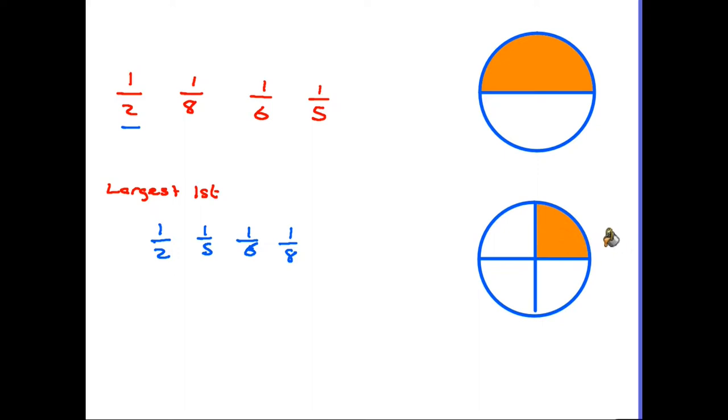So if I shade one of those quarters in we can quite easily see that a quarter, that is one over four, is smaller than a half which is one over two. So the smaller the number on the bottom of the fraction the larger the fraction is, provided that the number on the top is the same for each fraction.